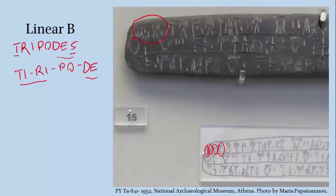Now around 1200 BC, for reasons that are still debated, many of the Mycenaean centers collapsed, and Linear B writing seems to have been abandoned around that time. But sometime in the early first millennium BC, Greek writing began to reappear in early versions of the Greek alphabet that's still in use today. Since the alphabet represents individual phonemes and not entire syllables as we saw in Linear B, it only needs 24 characters, and it can still represent Greek words much more faithfully than Linear B could. So now we can write the same word, 'tripodes,' like this.